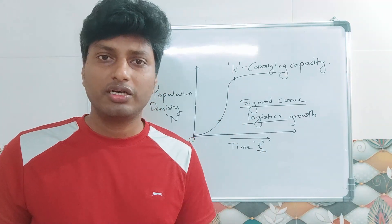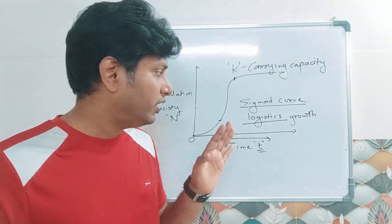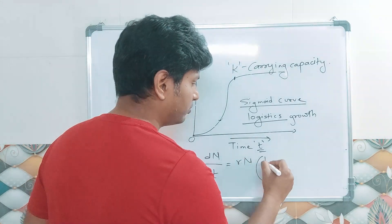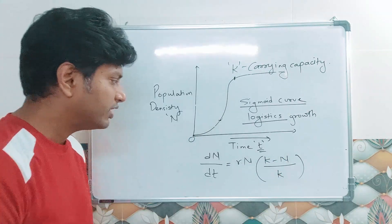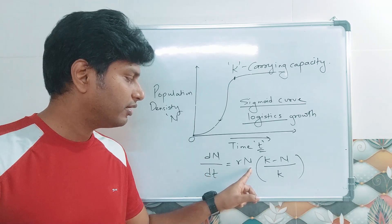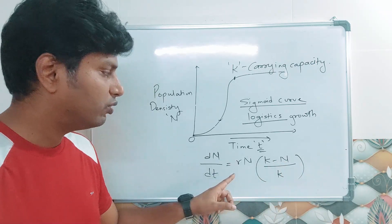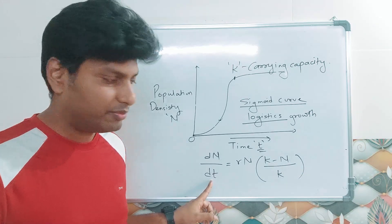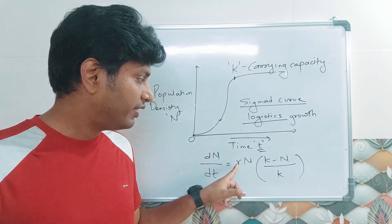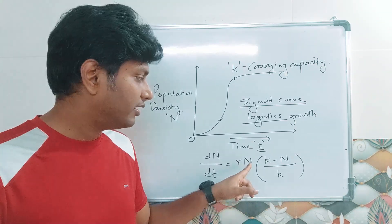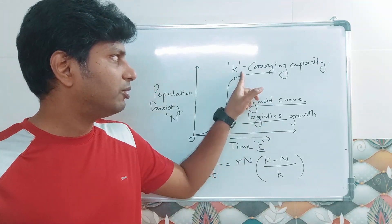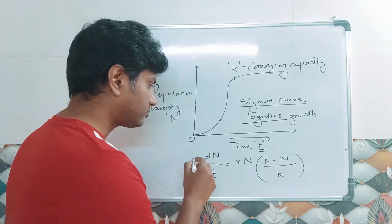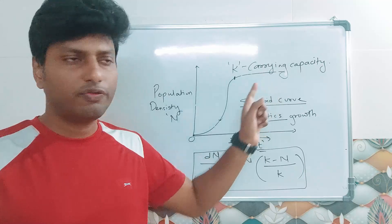This graph is also known as the Verhulst-Pearl logistic growth. The equation is: dN/dt = rN × (K − N)/K. Here, dN/dt is the change in population density with respect to time; r is the intrinsic rate of growth, calculated as birth rate minus death rate; N is population density; and K is the carrying capacity.